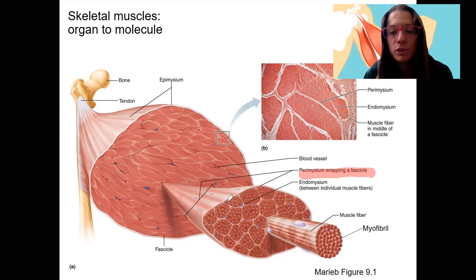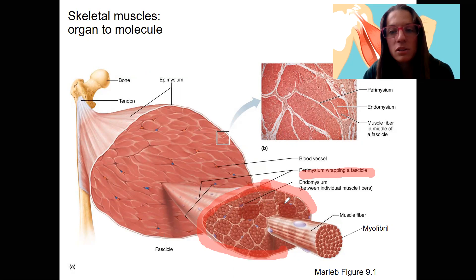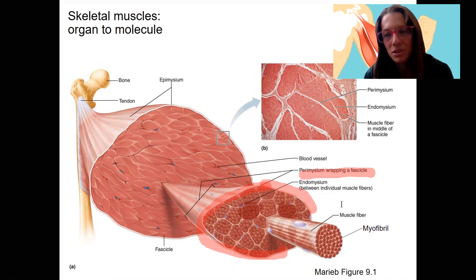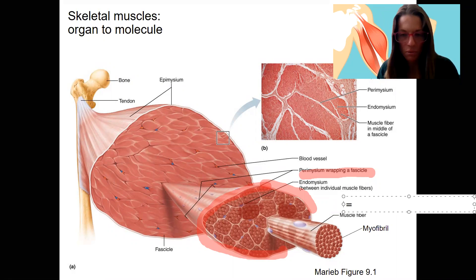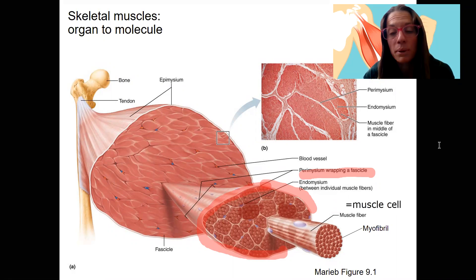Fascicles are composed of multiple cells. This entire thing is our fascicle, and then each individual piece inside is a cell — a muscle cell. Muscle cells are also called muscle fibers. It's a little confusing because there are also protein fibers inside cells, so: muscle cell equals muscle fiber. Muscle cells are surrounded by endomysium. Endo means inside. Endomysium surrounds individual muscle fibers — it will be around the cell membrane, or plasma membrane.